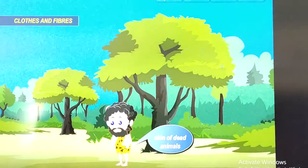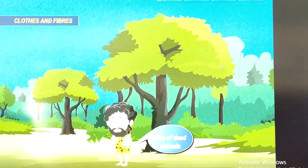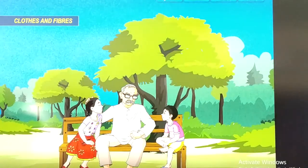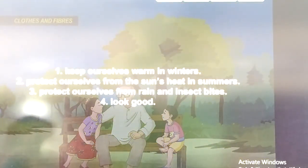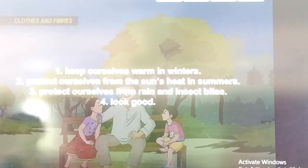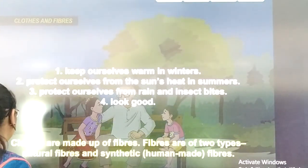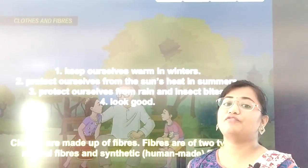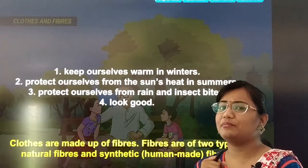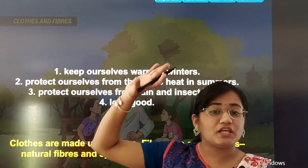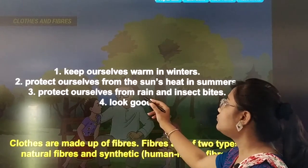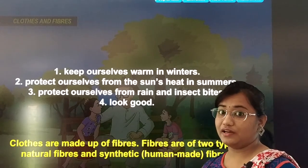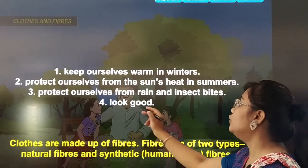Clothes and fibers. Early humans used leaves and skin of dead animals to cover their bodies. Nowadays we use clothes not just to cover our bodies, but also to keep ourselves warm in winter, protect ourselves from the sun's heat in summer, protect ourselves from rain and insect bites, and to look good.